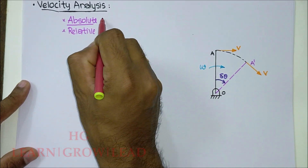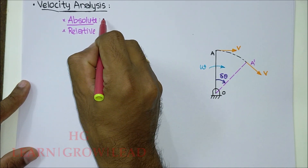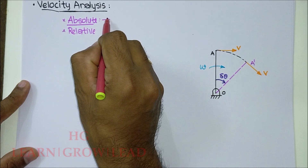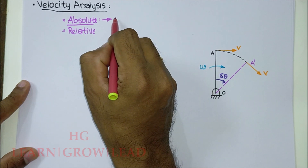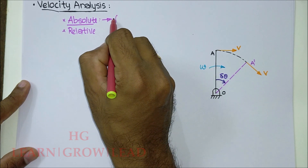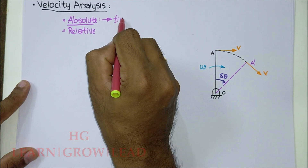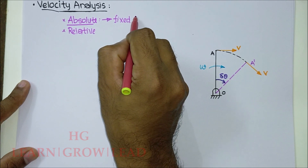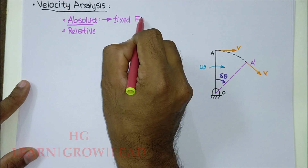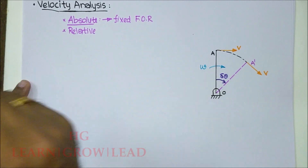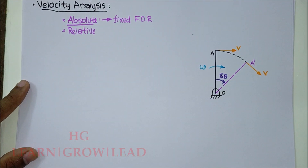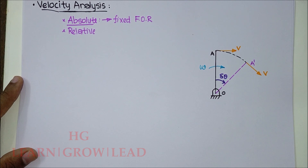Absolute velocity means the velocity of a body with respect to a fixed frame of reference. The fixed frame of reference is used to define absolute velocity.